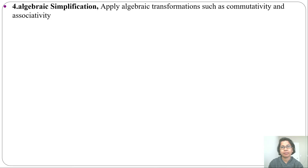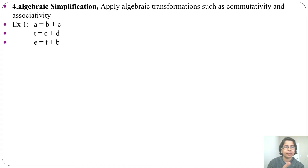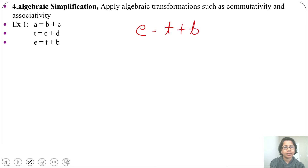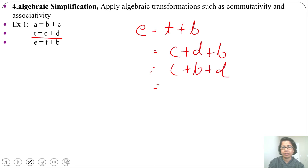Next is algebraic simplification. We can apply algebraic laws — commutative, associative, distributive — to substitute and simplify. For example, given some three-address instructions: E equal to t plus b, where t equal to c plus d. In place of t we can substitute c plus d, giving c plus d plus b. Then applying the commutative law and swapping d plus b, we get c plus b plus d. Applying commutative again we get b plus c plus d.